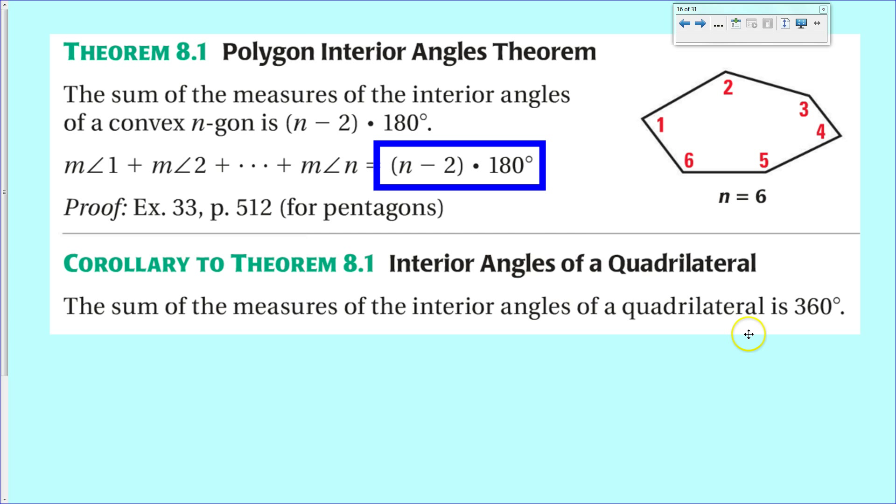Immediately, we get a corollary, and remember, a corollary is an immediate result. If we talk about a quadrilateral, that's 4 minus 2, which is 2, times 180, which is 360.